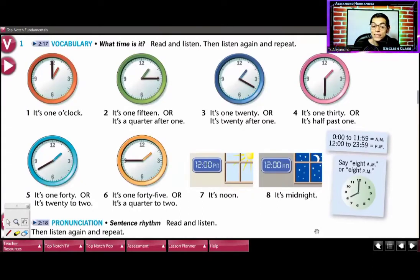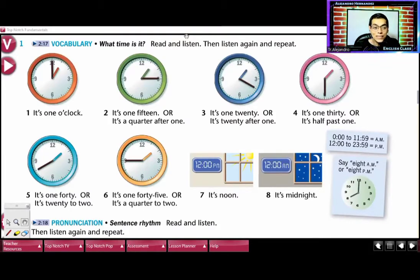Telling the time. We're going to be reading the vocabulary for what time is it. We have number one: it is one o'clock. Number two: it is one fifteen, or it is quarter after one.